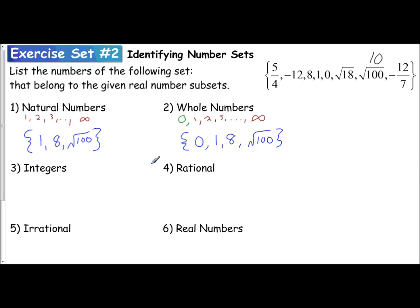Integers start at negative infinity and then they count up, so we have negative 3, negative 2, negative 1, and then it includes 0, and then 1, 2, 3, all the way up. You can hopefully see that if I have an integer, integers include your whole numbers as well, which your whole numbers include your natural numbers. So I know in my list I'm going to have to include my whole numbers, 0, 1, 8, square root of 100, that are in this list.